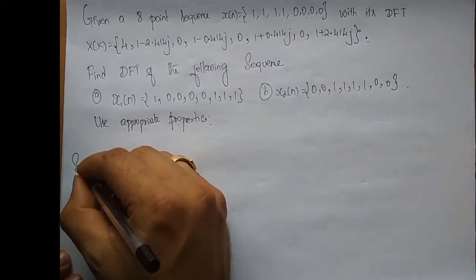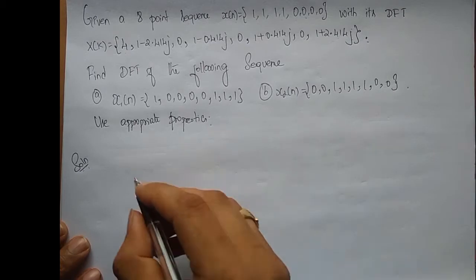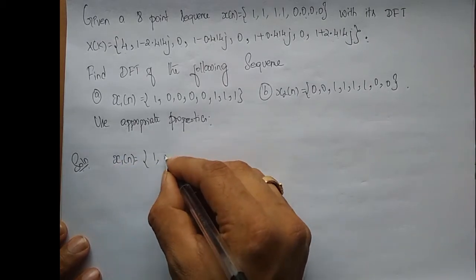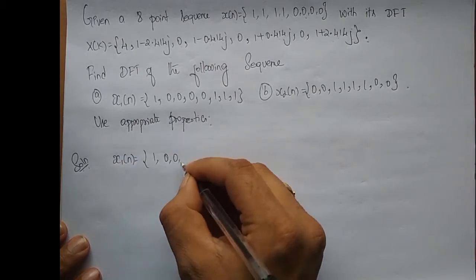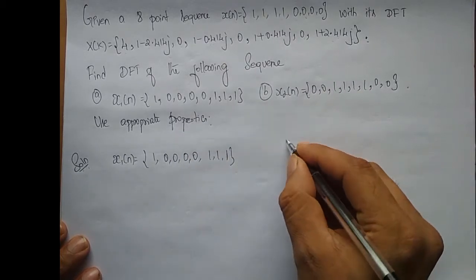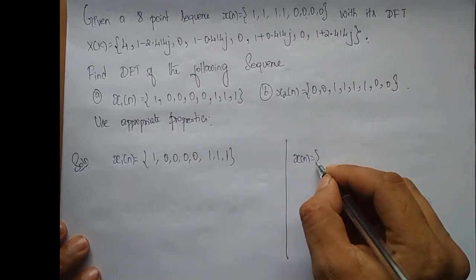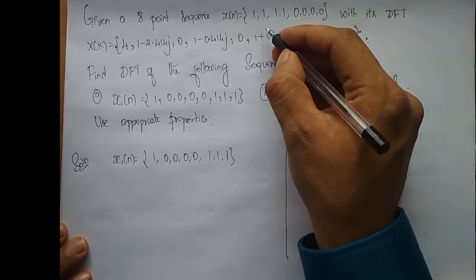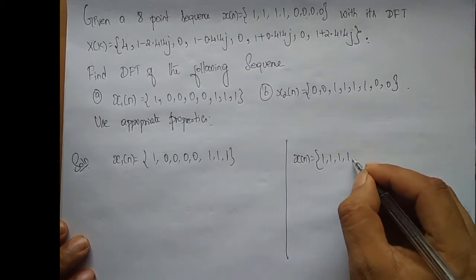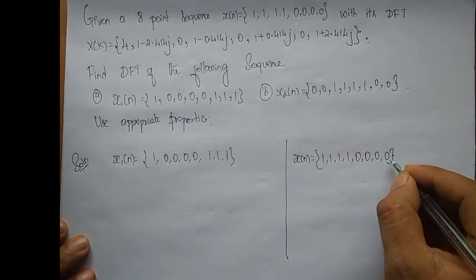So try to solve this solution. Now what is X1 given by? It is 1, 0, 0, 0, 0, 1, 1, 1. But what is X of n? X of n is the sequence 1, 1, 1, 1, 0, 0, 0, 0.